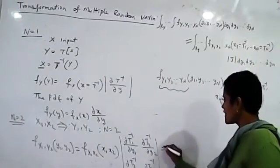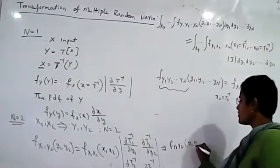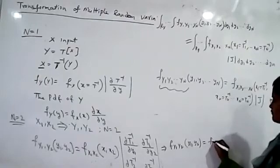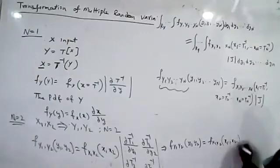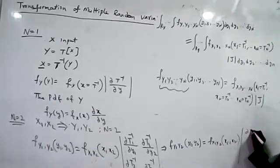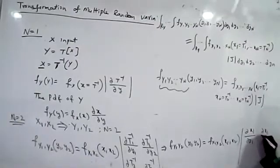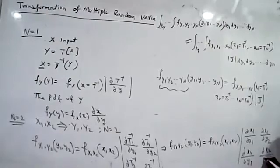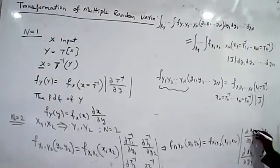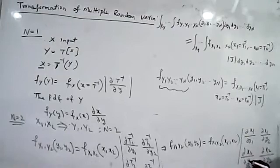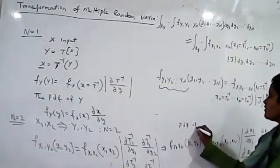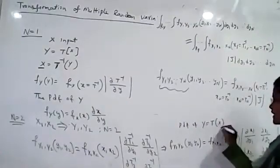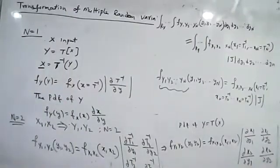So f_{y_1,y_2}(y_1,y_2) can be written as f_{x_1,x_2}(x_1,x_2), where T_1^{-1} gives us x_1 and T_2^{-1} gives us x_2. Therefore the Jacobian becomes |J| = |[∂x_1/∂y_1, ∂x_1/∂y_2; ∂x_2/∂y_1, ∂x_2/∂y_2]|. This is the probability density function of y as a transformation of x_1 and x_2.